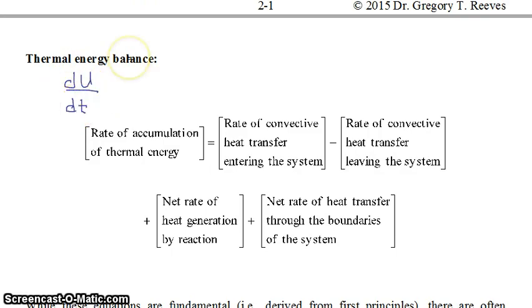equals the rate of convective heat transfer entering the system. A lot of times that would be some mass flow rate in times some specific enthalpy, minus the rate of convective heat transfer leaving the system, which would be some mass flow rate out times some specific enthalpy,